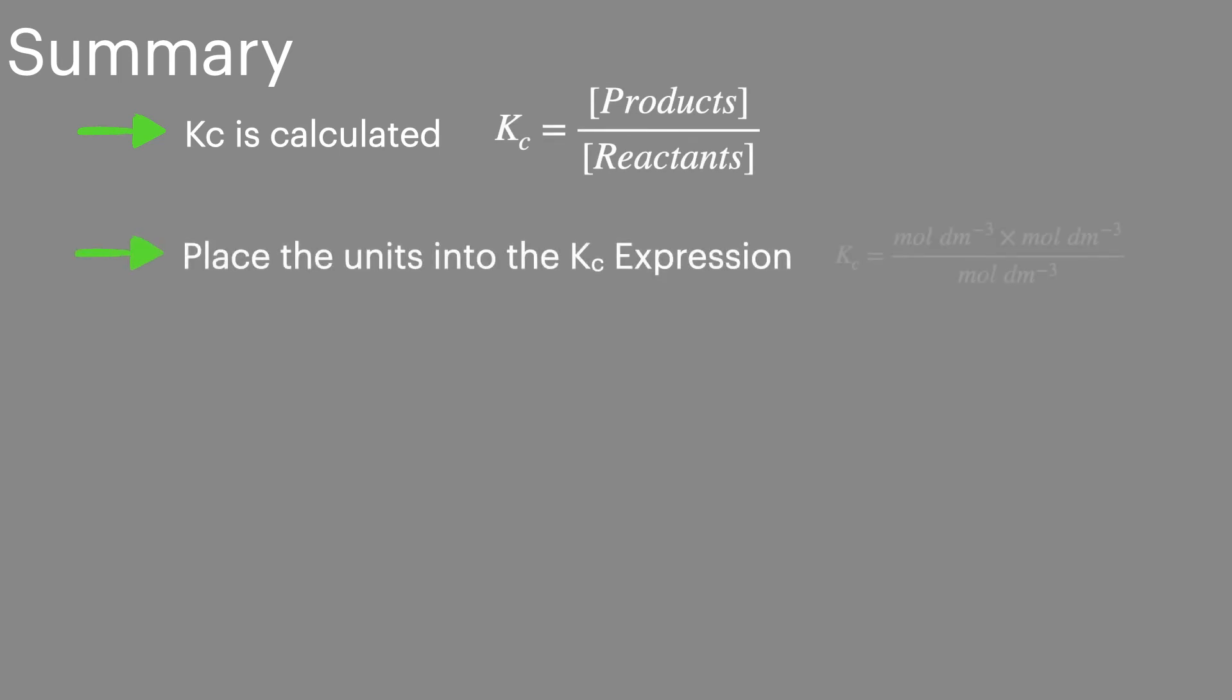To calculate the units place them into the KC expression and then you can use that expression to cancel out the ones that are common on the top row and on the bottom row.